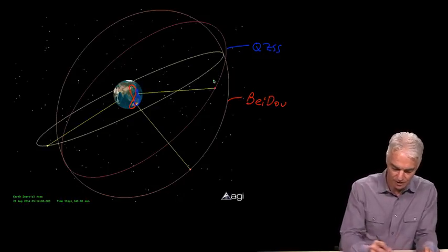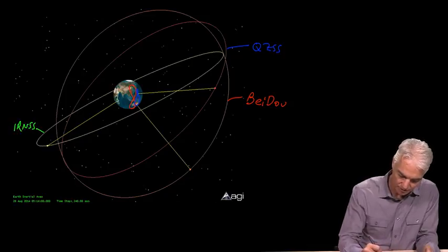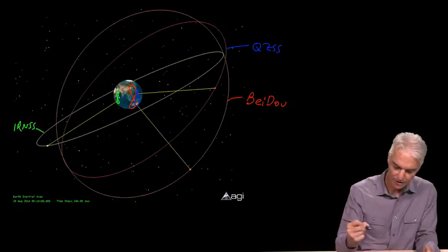And you remember that that had a noticeable eccentricity, so that it produced this asymmetric eight over Japan. And then the one with the least inclination angle is IRNSS. And it's set so that its longitude is there to the left of India.